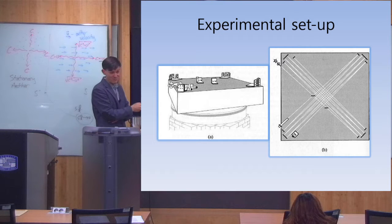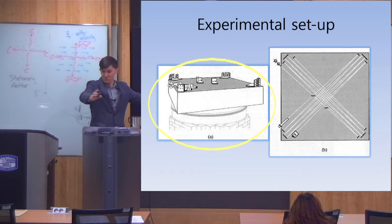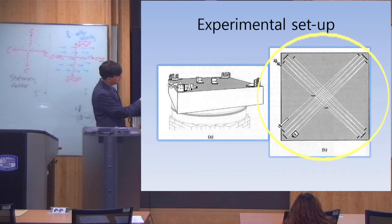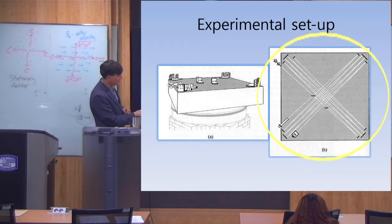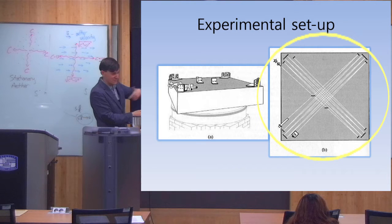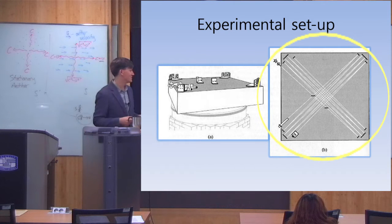Here are some of the original pictures of the experiment. The apparatus was on a big slab of marble floated on a bath of oil so it could be very smoothly rotated. On the top you had these mirrors. The light was actually reflected not just once but many times — one, two, three, four, five, six, seven, eight, nine times — to increase the total length and make the experiment as long as possible, because the longer L is, the bigger the time difference.